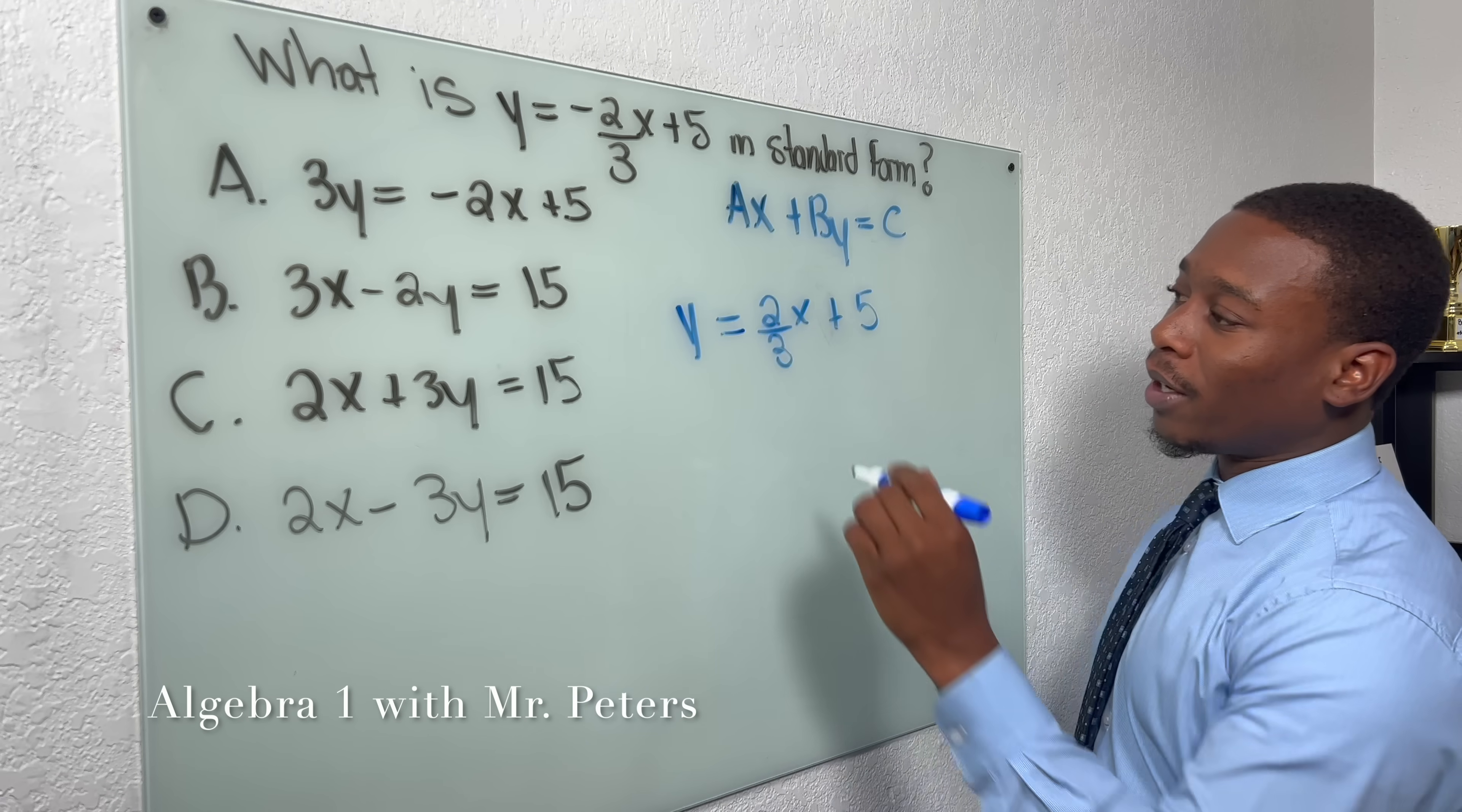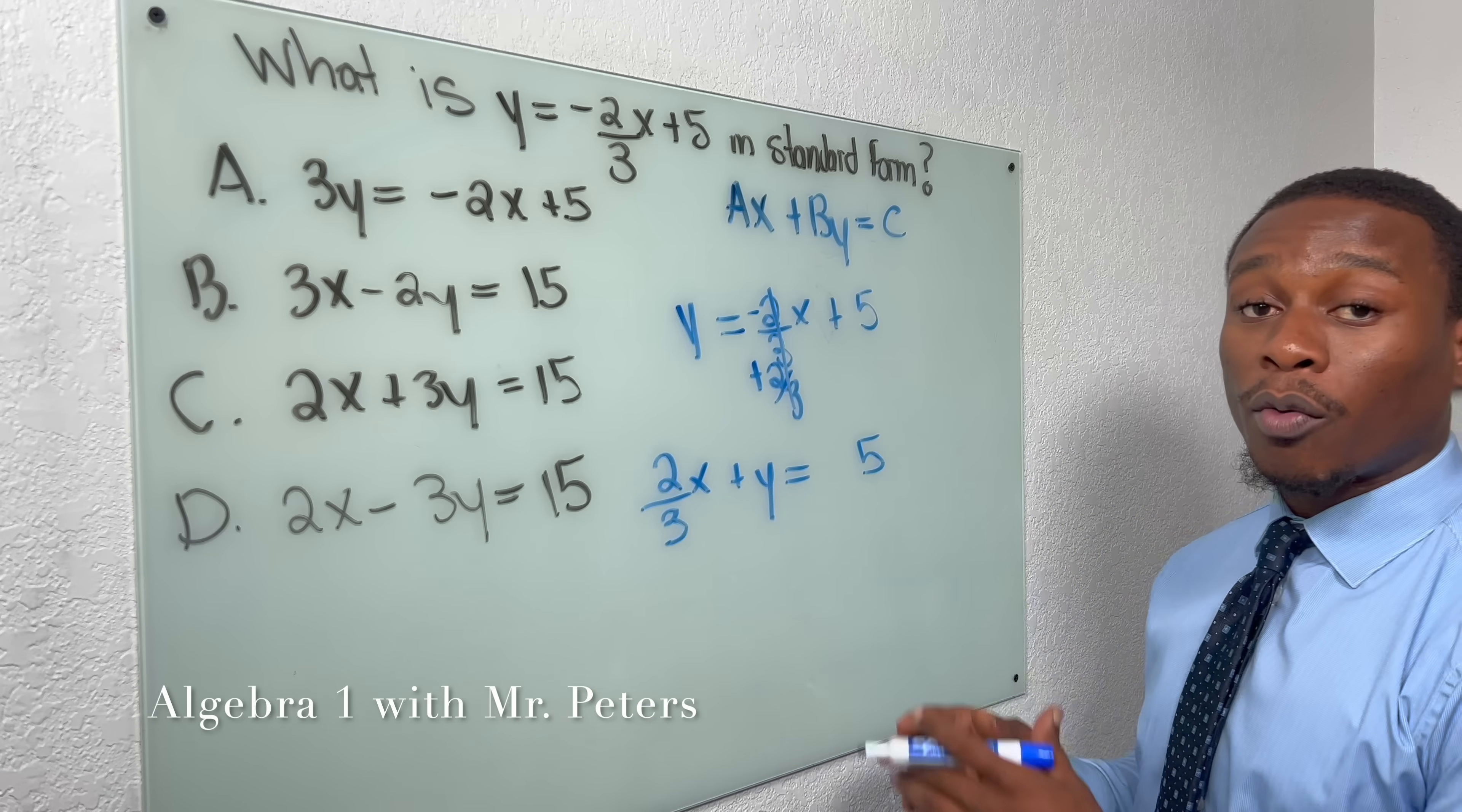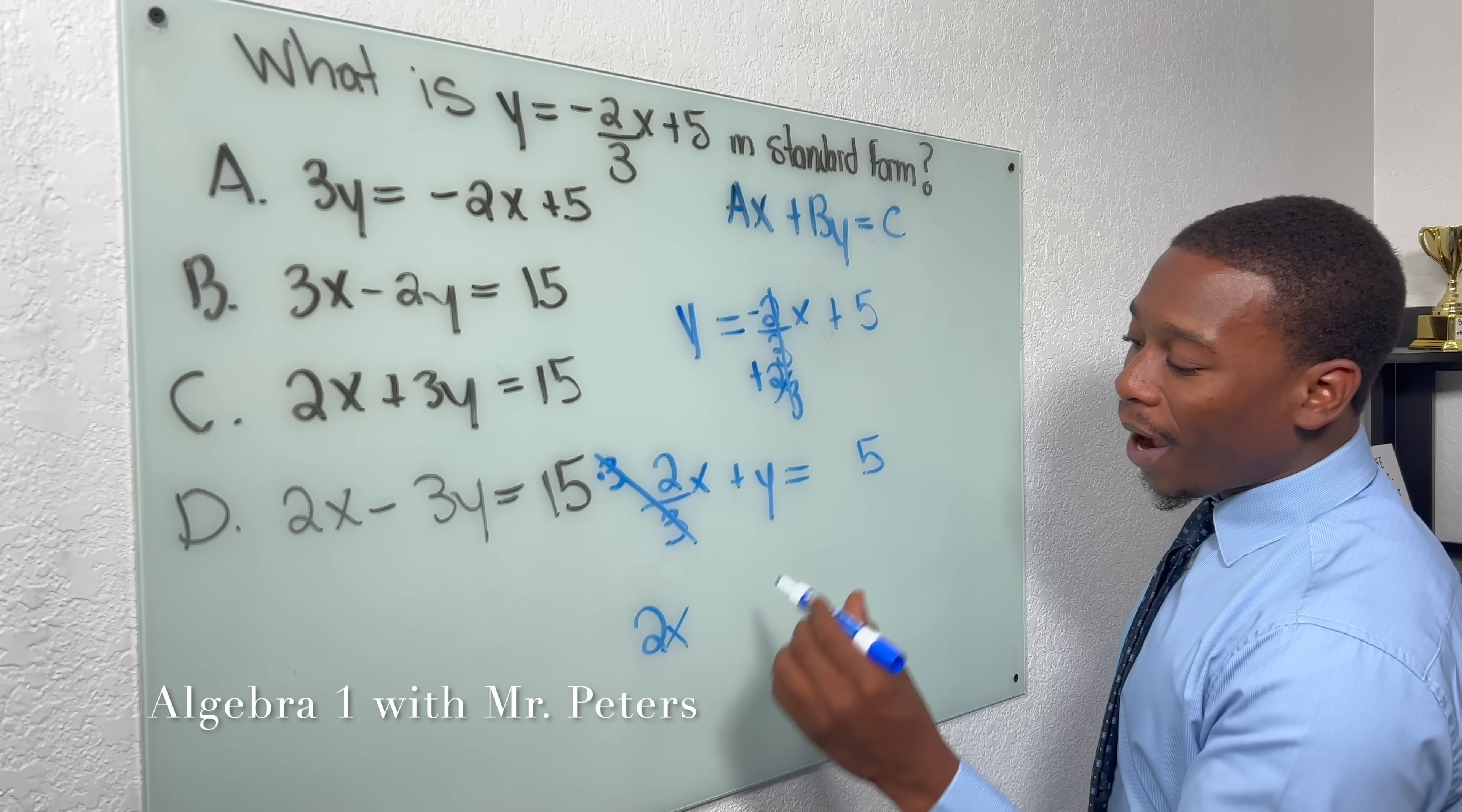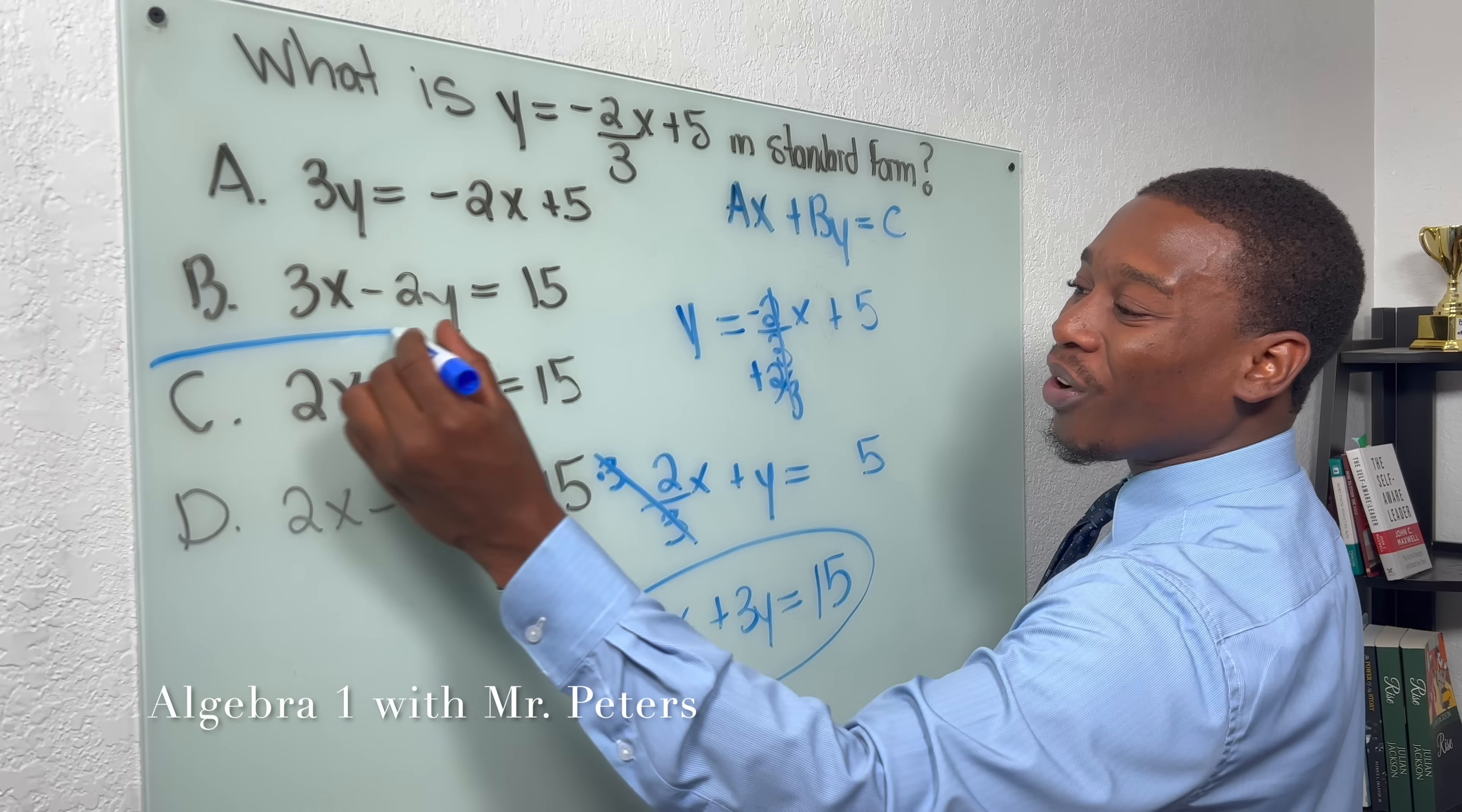So there's two ways to do this, guys. We can add 2/3 on both sides. So we'll have 2/3x + y is equal to 5. Then from here, we can get rid of our fraction by multiplying by the denominator. So when I multiply by the denominator, 2/3x changes to 2x, y changes into 3y, and 5 changes into 15. And lo and behold, we have our standard form equation. And our answer is going to be C.